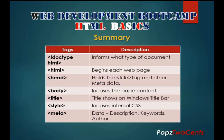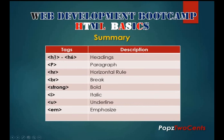Here's a summary of the tags we have learned thus far: the doctype, HTML, head, body, title, style, and meta tags; the heading tags; the p tag; the hr tag; the br tag; the strong tag; the i tag; the u tag; and the em tag.